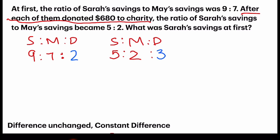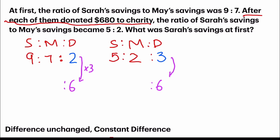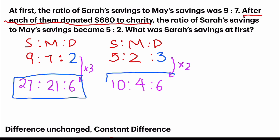Our job is to change both ratios into a common multiple so we can work it out. The common multiple I'm going to choose is 6. The after ratio I multiply by 3: giving 6, 21, and 27 — wait, the before ratio I multiply by 3 giving 27 and 21, with a difference of 6. And the after ratio I multiply by 2: giving 10, 4, and 6. So the new before ratio is 27 to 21, and the new after ratio is 10 to 4.